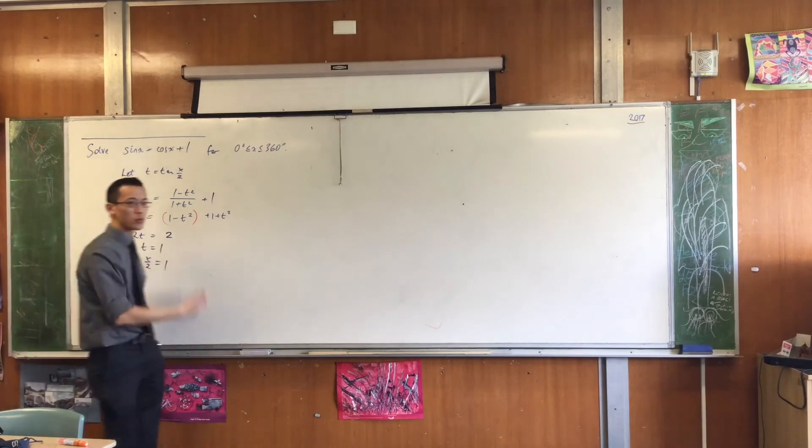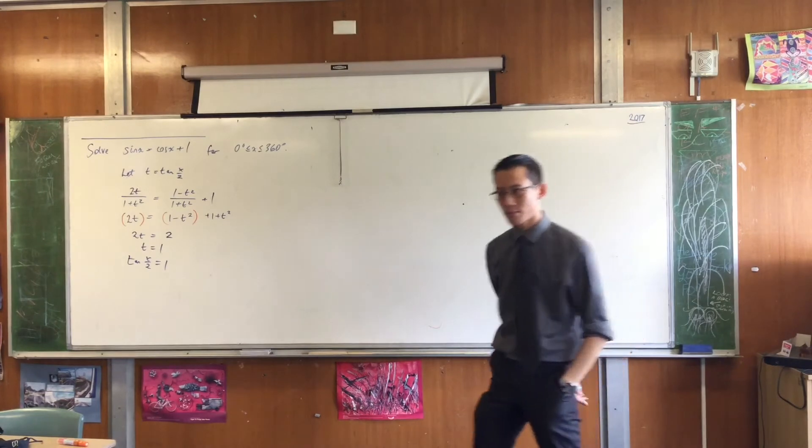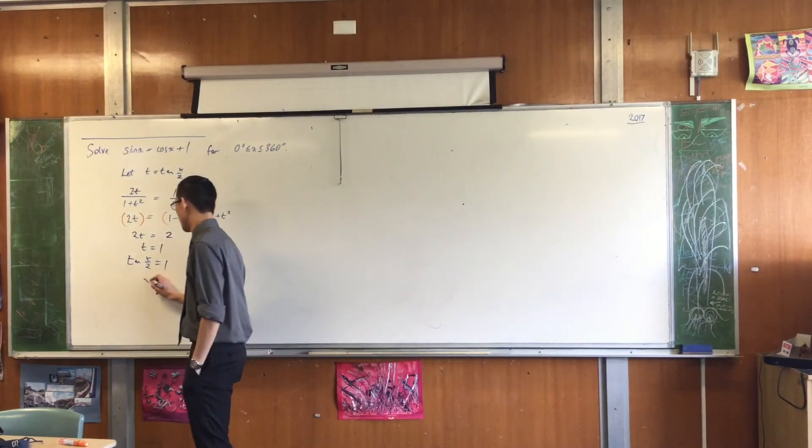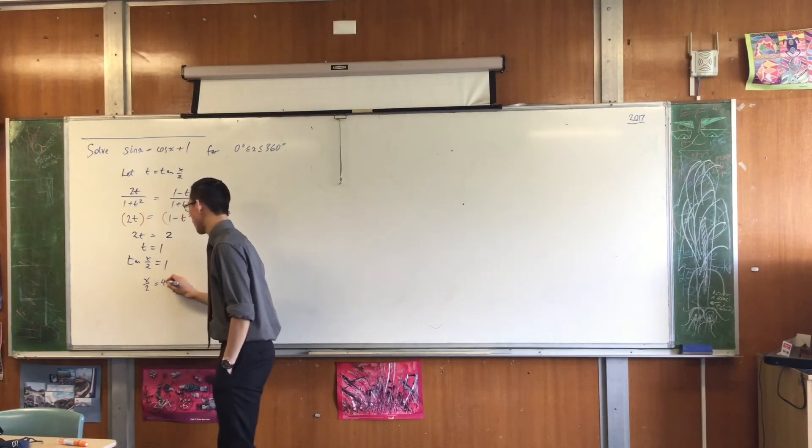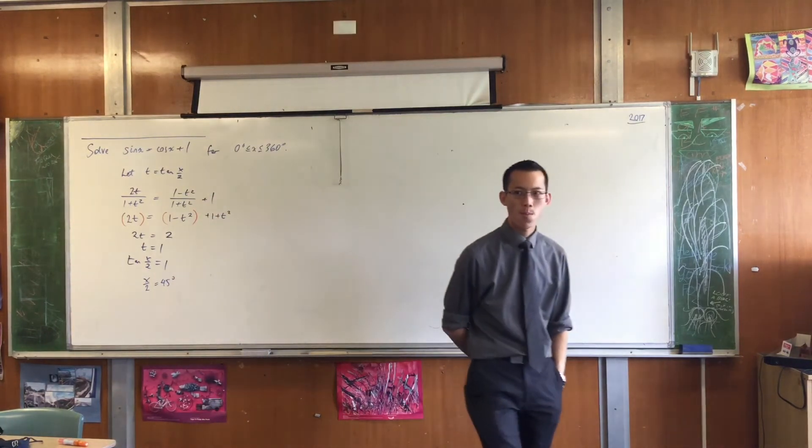Now tan of something equals 1. This is an exact value, an exact value that you know pretty well. What's the angle? It's 45 degrees, right? So x on 2 equals 45 degrees. Is that the only solution? No. What's the other one?